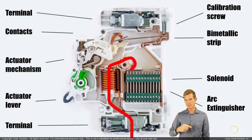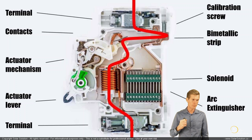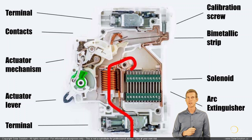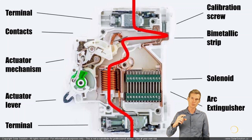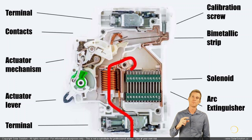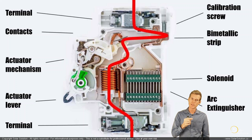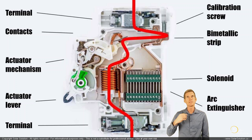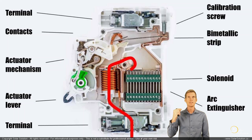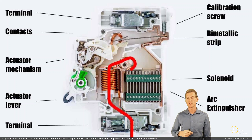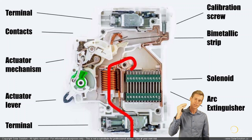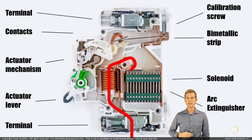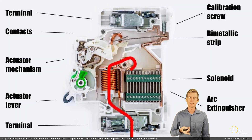Similarly for the instantaneous tripping current — all current runs through both the solenoid and the bimetallic strip. But if there's a sudden extreme increase of current, the coil inside the solenoid activates, pushes the mechanism, trips it, and the contacts open. So the circuit can be interrupted in three ways: the bimetallic strip bending from the slow tripping current, the solenoid activating from an instant burst of high current, or manually flipping the actuator lever.